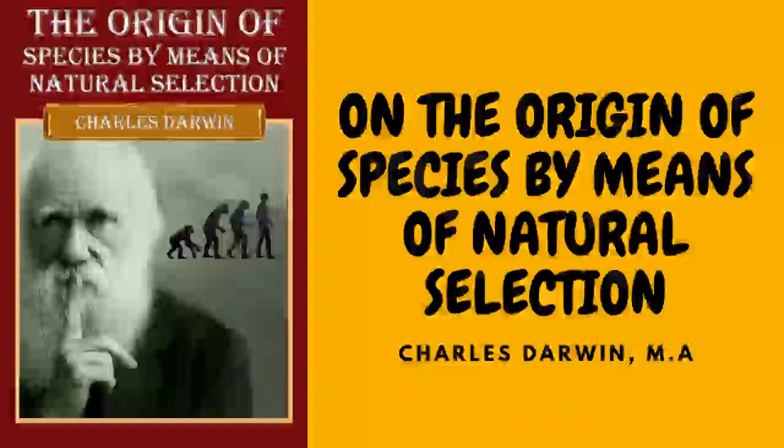It is certain that several of our eminent breeders have even within a single lifetime modified to a large extent some breeds of cattle and sheep. In order fully to realize what they have done, it is almost necessary to read several of the many treatises devoted to this subject and to inspect the animals. Breeders habitually speak of an animal's organization as something quite plastic, which they can model almost as they please.